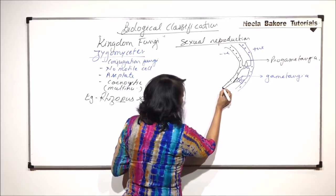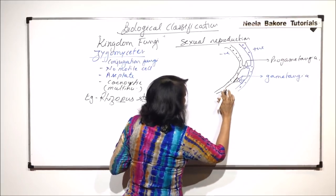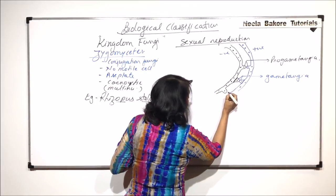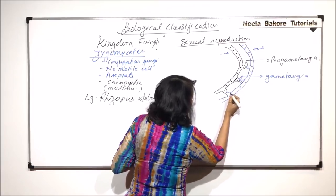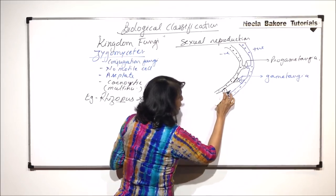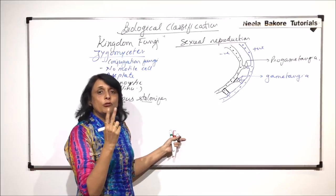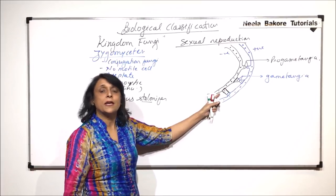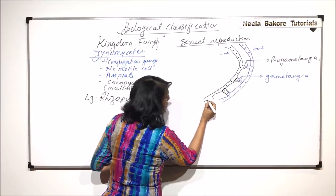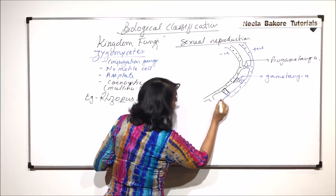Now, next step which is going to happen here is, this gametangium of the negative strain and the gametangium of the positive strain. There are septa which are formed. That is, gametangium is formed. And now, the wall between the two dissolves. That means there is a segment formed where there are two nuclei. One nucleus of positive strain and one of negative strain. Now, in the next step, these two segments are going to fuse completely. And even their nuclei are also going to fuse.